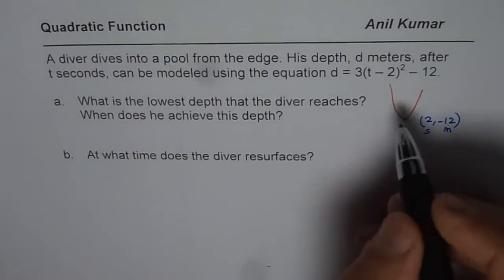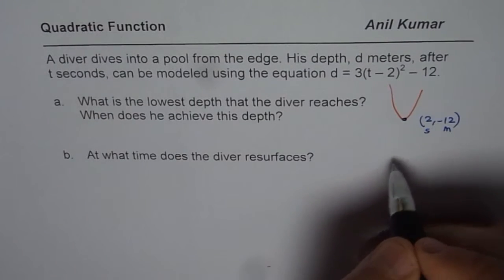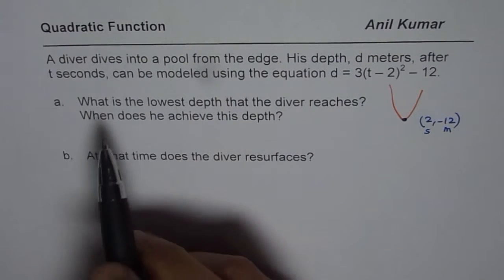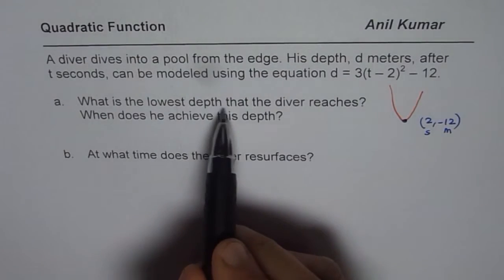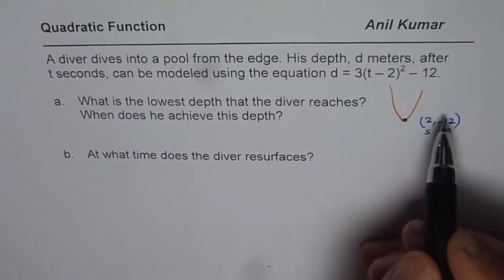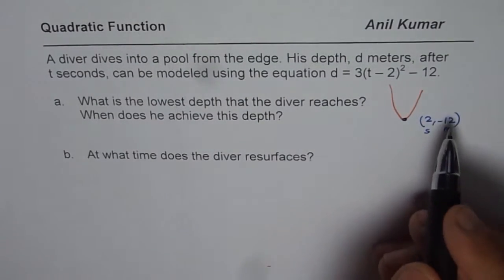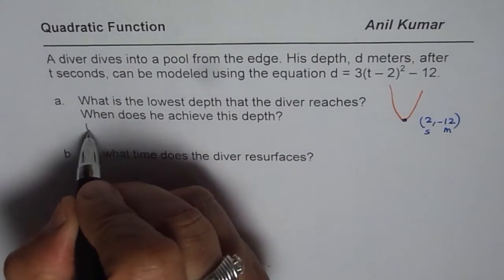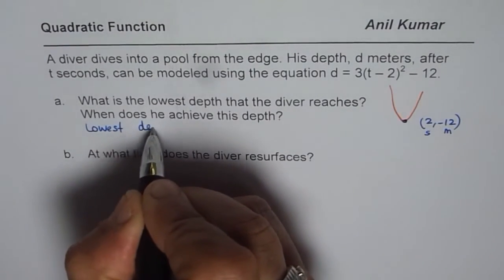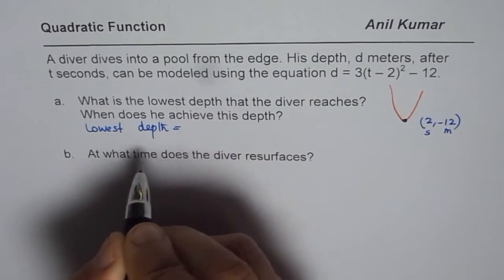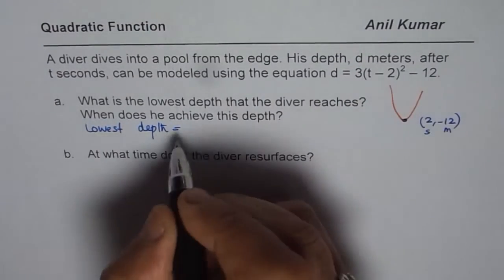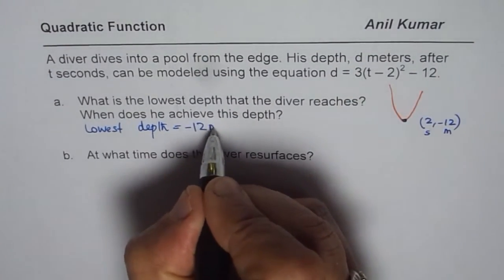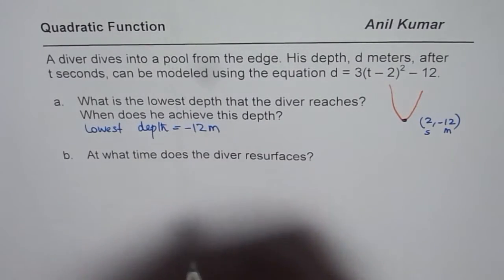Now let us answer the question. That is this point from the equation, we are just reading it. What is the lowest depth that the diver reaches? The depth is the y value, the d value. So the lowest depth equals -12 meters. Minus indicates going down.